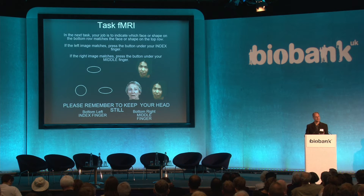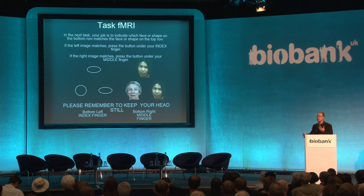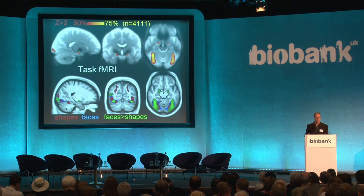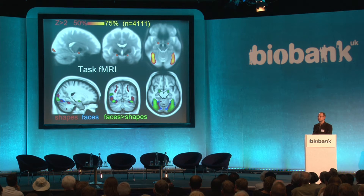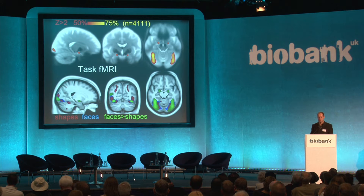In terms of activation and function of the brain, we have one particular task: the Hariri faces task, which looks at how the brain processes images of shapes and faces and emotional content. It's a very reliable task giving us information about different areas which respond to different stimuli. We summarise that with images and numbers capturing the strength of the response to the different parts of the task. This task was taken directly from the Human Connectome Project so we can link directly into their results.